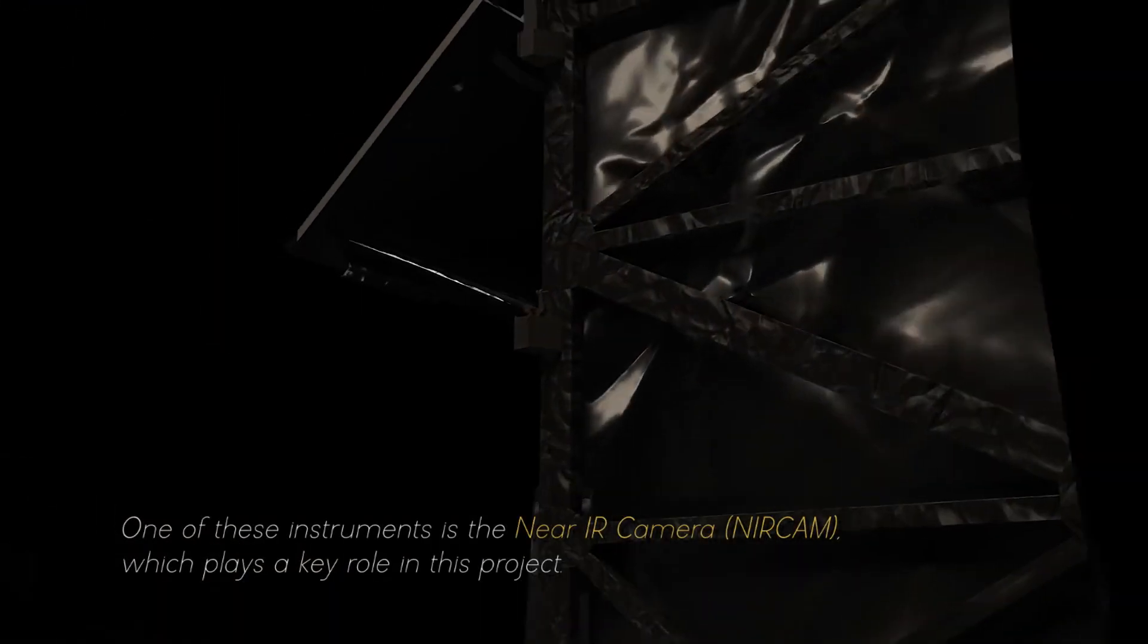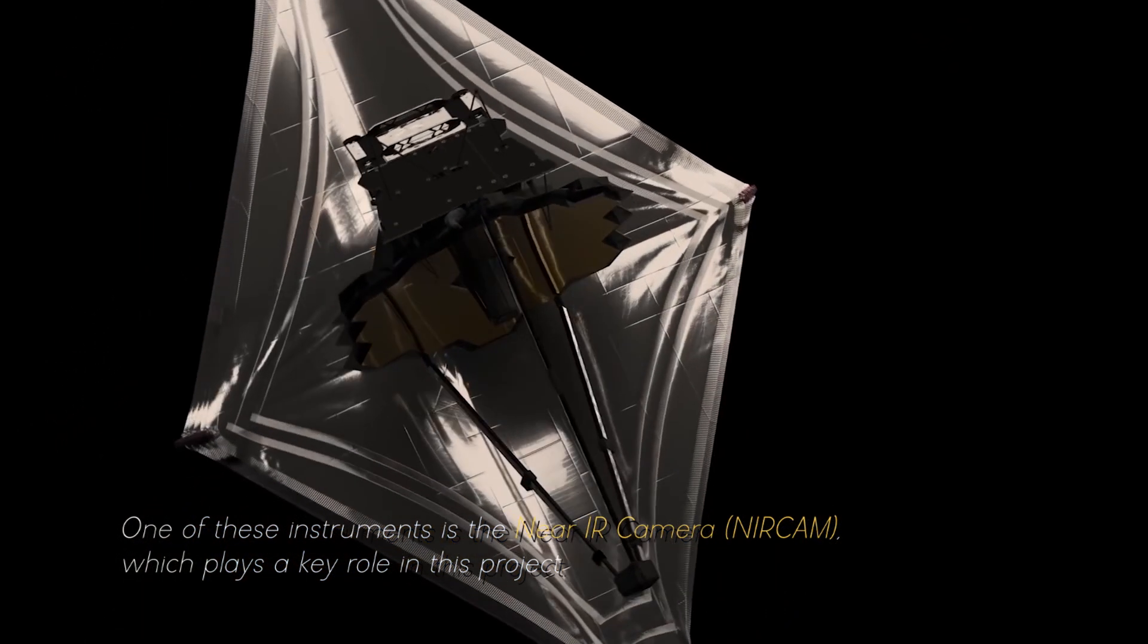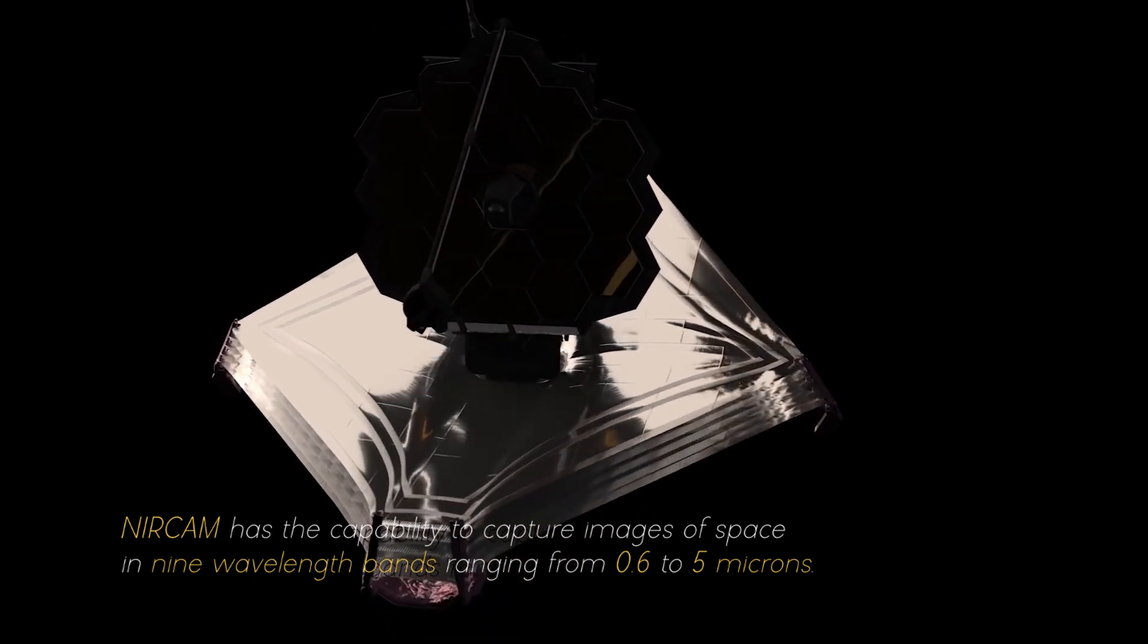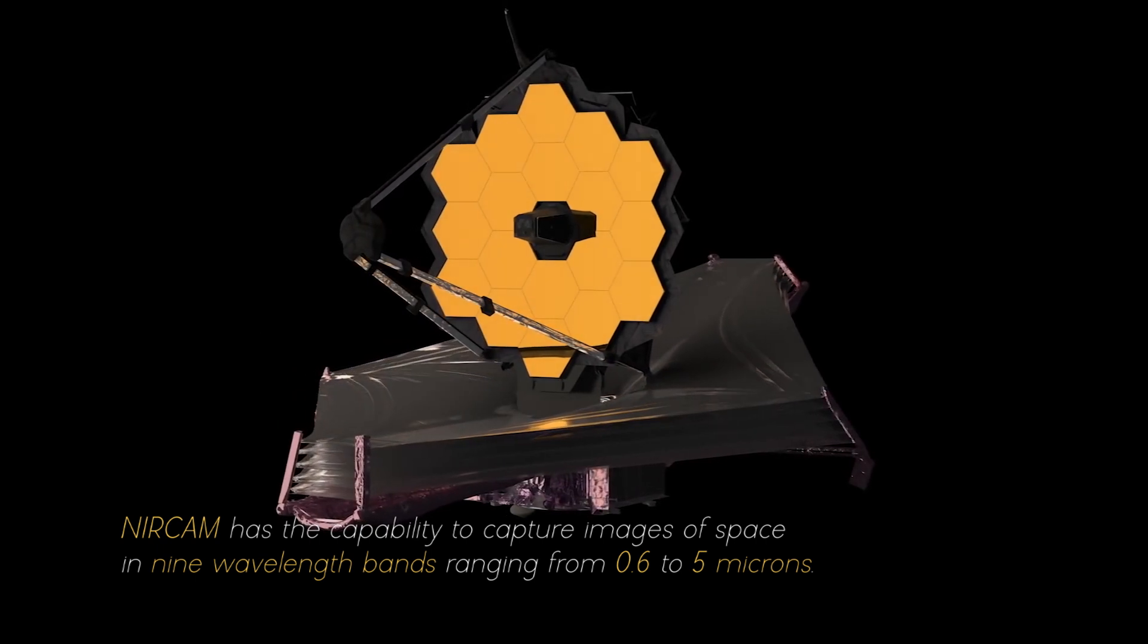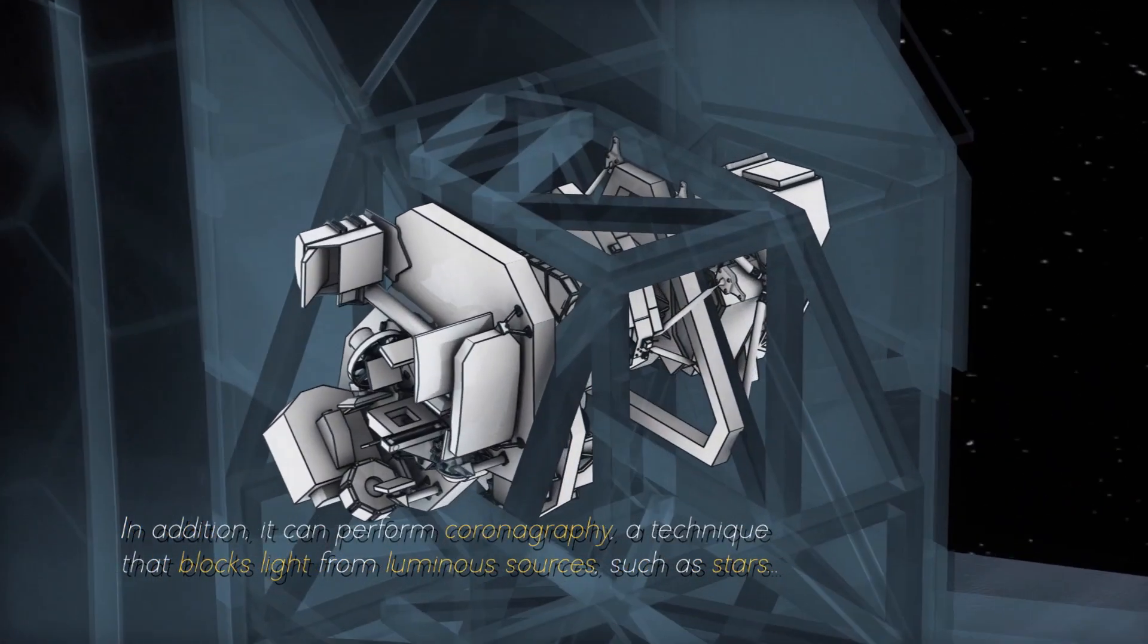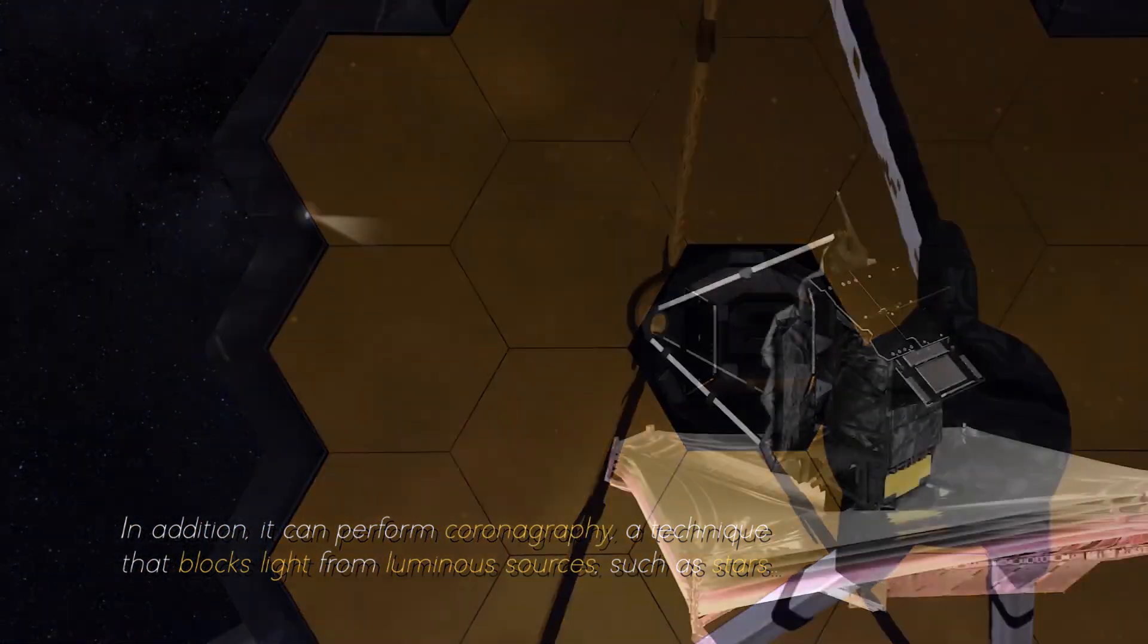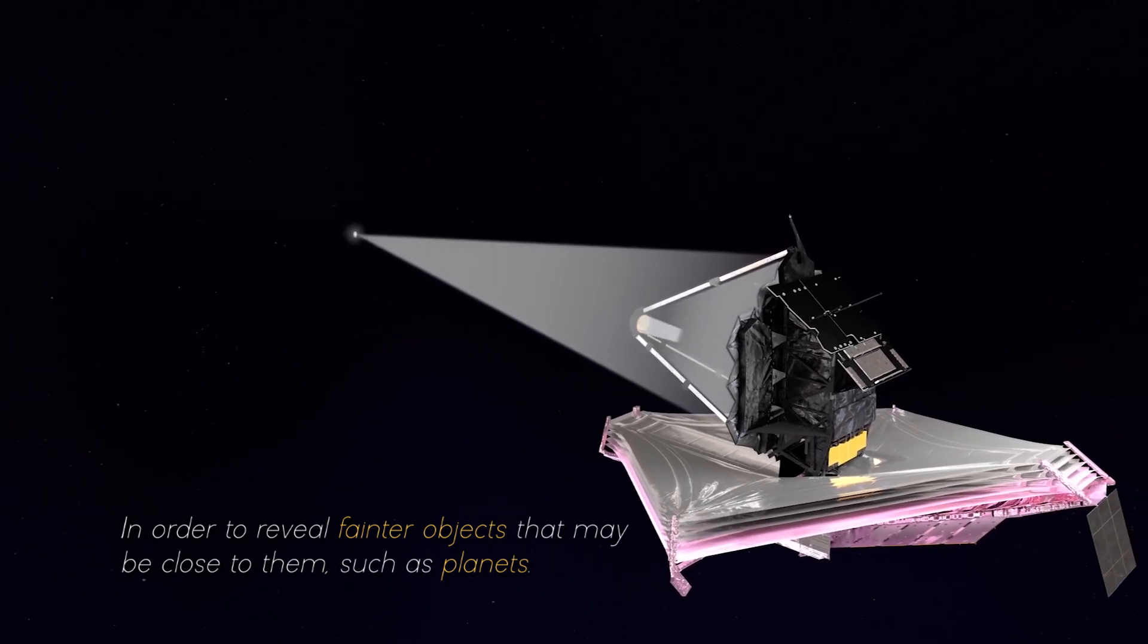One of these instruments is the NIR camera, NIRCam, which plays a key role in this project. NIRCam has the capability to capture images of space in nine wavelength bands ranging from 0.6 to 5 microns. In addition, it can perform coronography, a technique that blocks light from luminous sources, such as stars, in order to reveal fainter objects that may be close to them, such as planets.